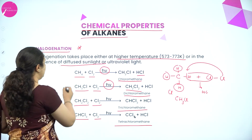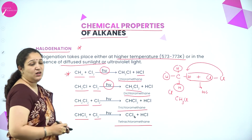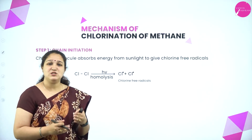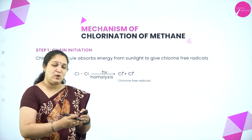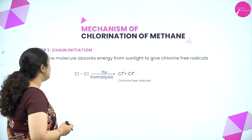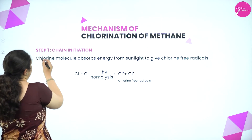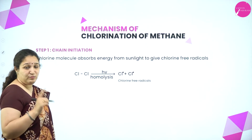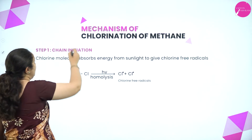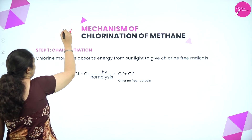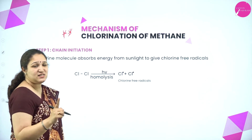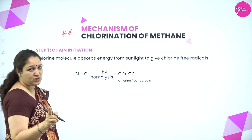Now we learn the mechanism for the first step. Mechanism means understanding what happens step by step. This is a very important question — it has been asked several times for three marks, with three steps and equations. The first step is chain initiation: chlorine molecules absorb energy from sunlight and the Cl–Cl bond undergoes homolysis, giving two chlorine free radicals.